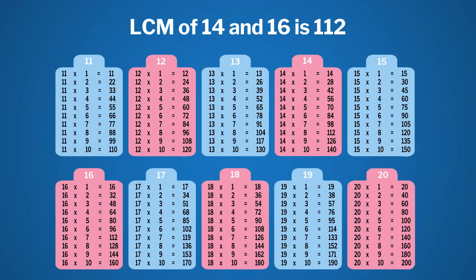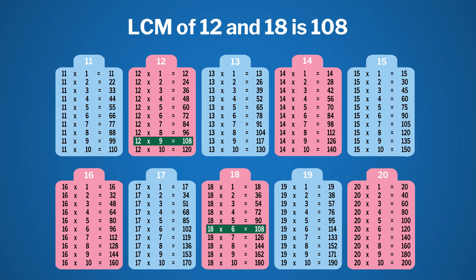You can try to find out the LCM of numbers using a table chart. For example, 84 comes in the table of 12 and 14, hence the LCM of 12 and 14 is 84. Similarly, 112 comes in the table of 14 and 16, so it is the LCM of 14 and 16. Or you can have 108, which comes in the table of 12 and 18, so that becomes the LCM of 12 and 18.